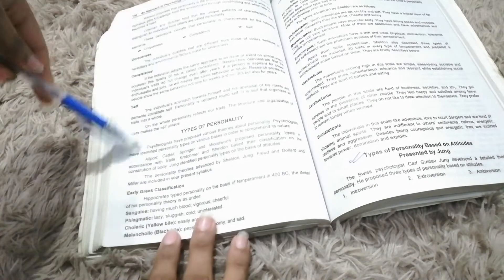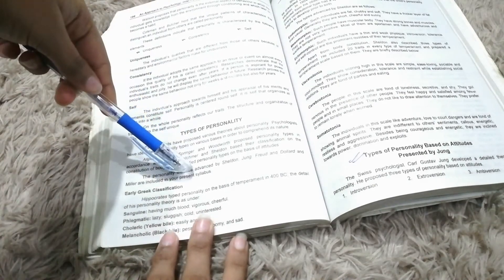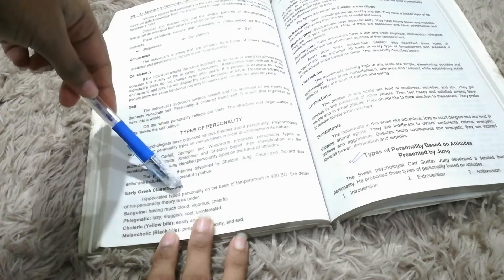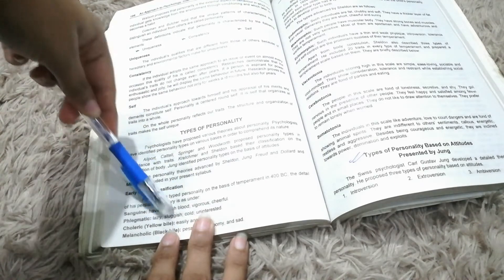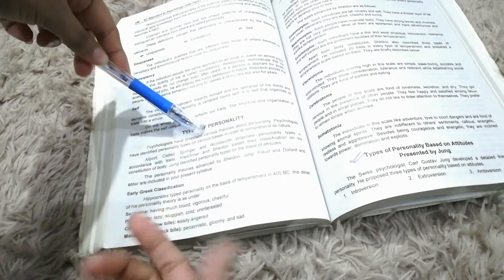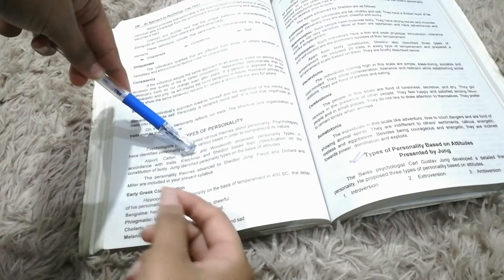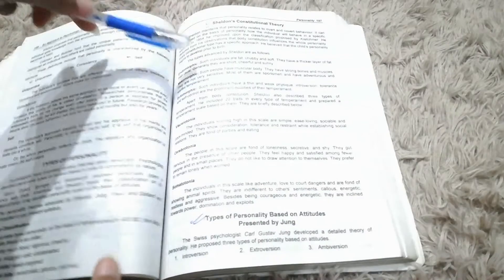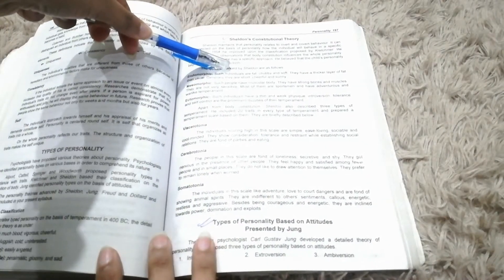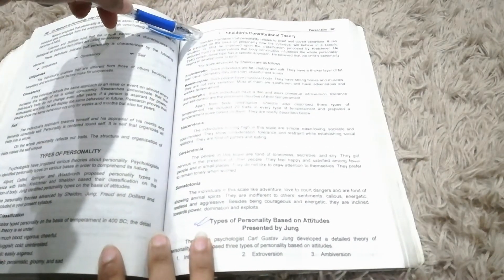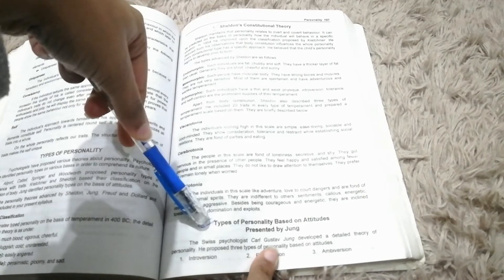Types of personality. I have written a few times. After that Early Greek Classification - this is not so important but one time you can read that. Then Sheldon's Constitutional Theory. This is important for long. Then Type of personality based on attitude.